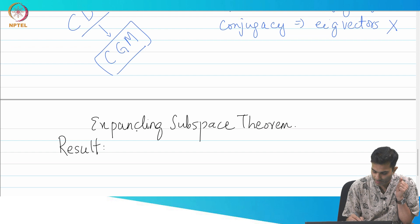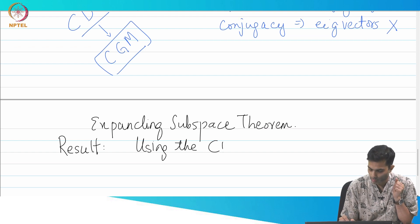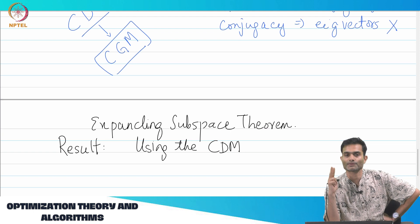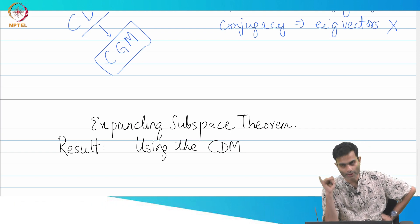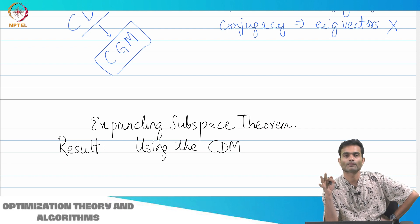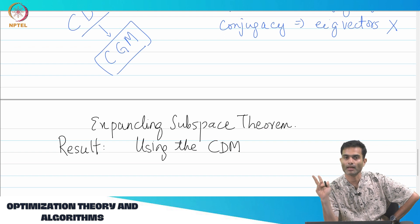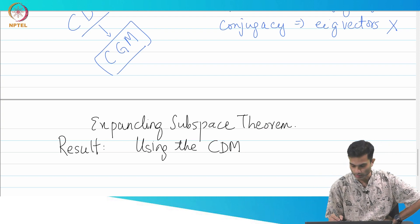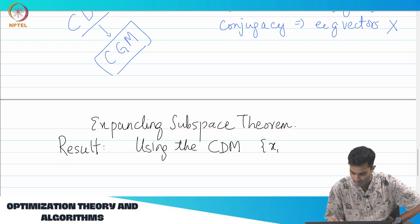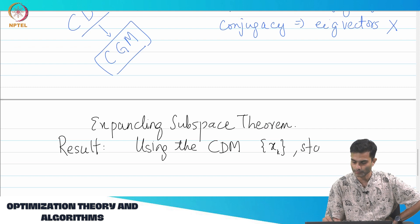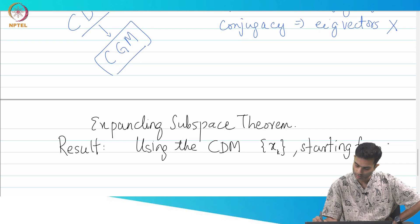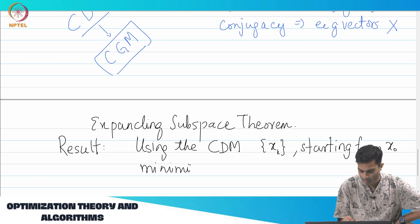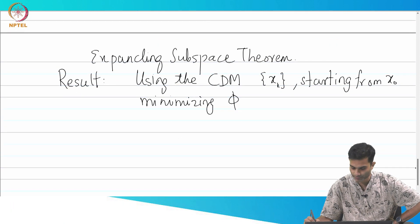So, using the CDM — when I say using the CDM, what does it imply? There were two requirements for CDM: give me a set of conjugate directions and then do exact line search along each one of those directions — those alphas — that is what makes a CDM. That gave me a sequence xk, starting from some arbitrary x naught. We were minimizing phi, my objective function phi.